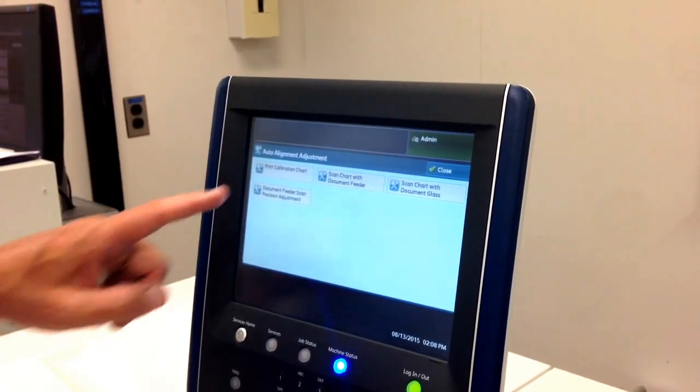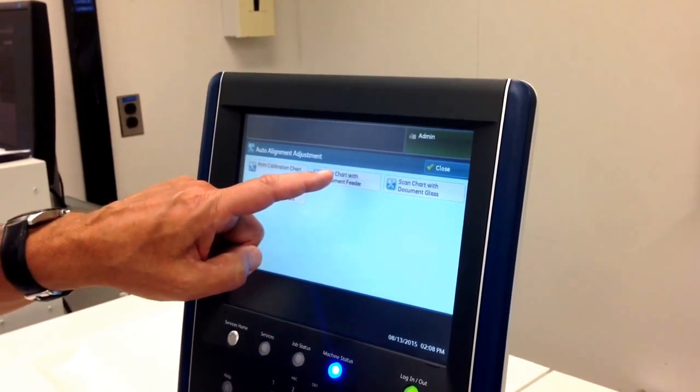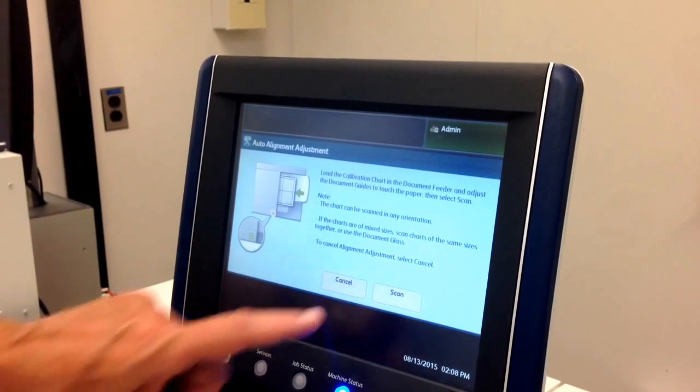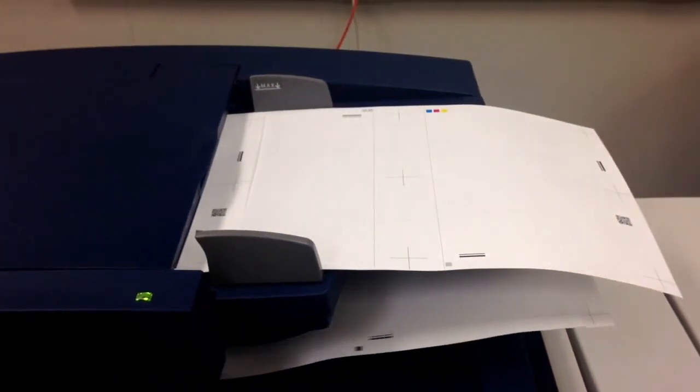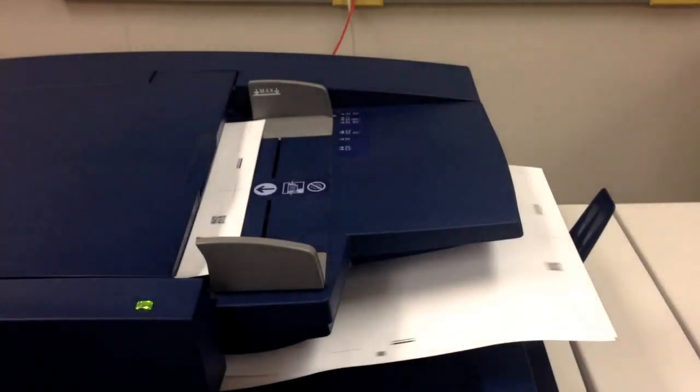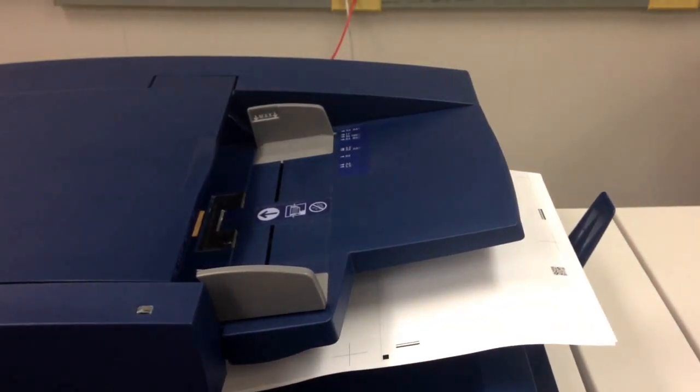Now what we're going to do is tell the press to scan those charts using the document feeder. And we're going to go ahead and start our scan. They'll be read into the press. The press will now calculate for perfect front to back registration.